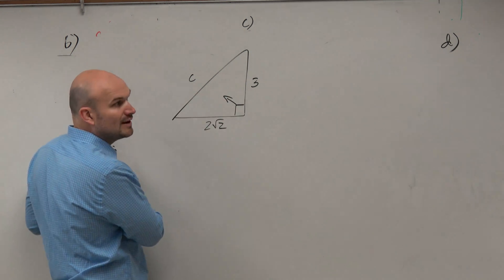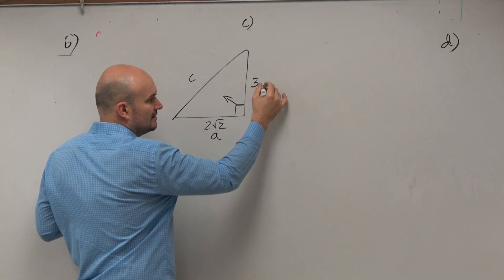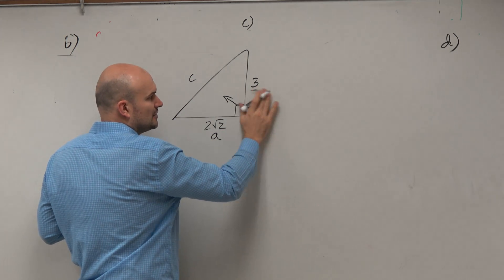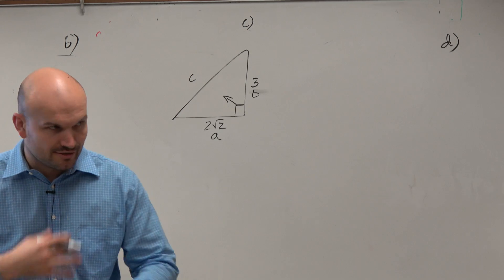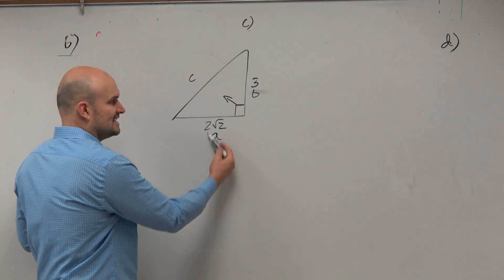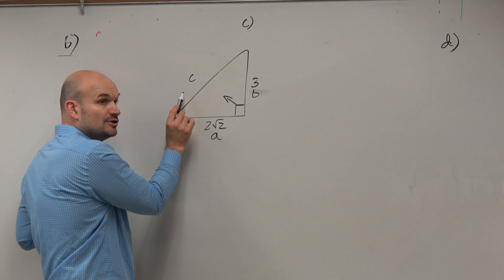Labeling our a squared plus b squared equals c squared, we can label this as a leg. And therefore, this is our other leg, which we can call b. Again, you don't need to stick with a, b, and c. You can label it however you like to. Just know that it's leg squared plus leg squared is going to equal your hypotenuse squared.